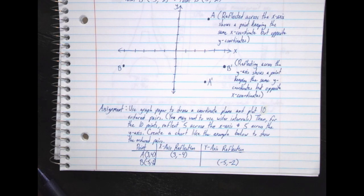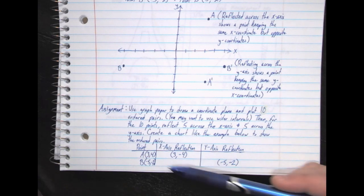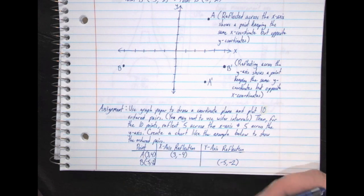Then, at least make it large enough that you can easily fit up to 20 ordered pairs on there, because that's what we're going to have to do when we get to the end of this assignment. So, for the 10 points that you choose, and you're going to put those in this nice organized chart down here.